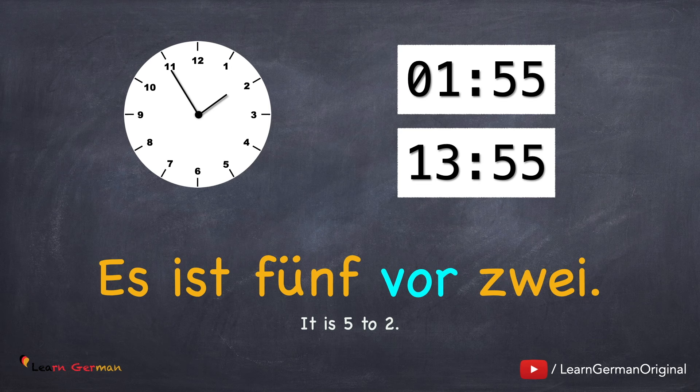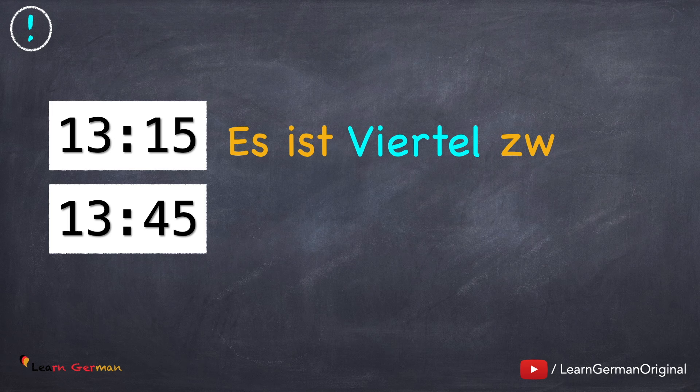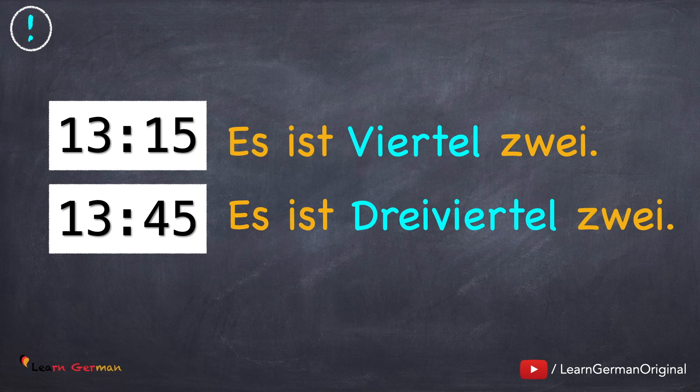In some regions in Germany — eastern and southern — the word viertel is used in more ways. You might come across time being read as Es ist viertel zwei, and not viertel nach eins. Es ist drei viertel zwei, and not viertel vor zwei. But these are sometimes not even known to Germans — it's very region specific.